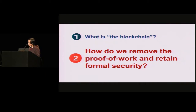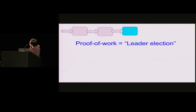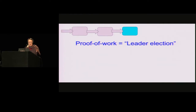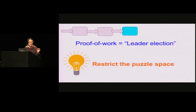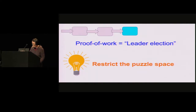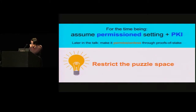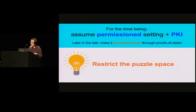Now we know how the Nakamoto blockchain works — let's try to remove the proof of work. We observe that we can think of the Nakamoto blockchain as performing leader election. Whenever you successfully find the puzzle solution, you are the next leader and get to propose the next batch of transactions. Our key idea is to restrict the puzzle space. In Bitcoin, nodes have to try many different puzzle solutions. But what if there aren't so many puzzle solutions to try? Then you don't have to work so hard.